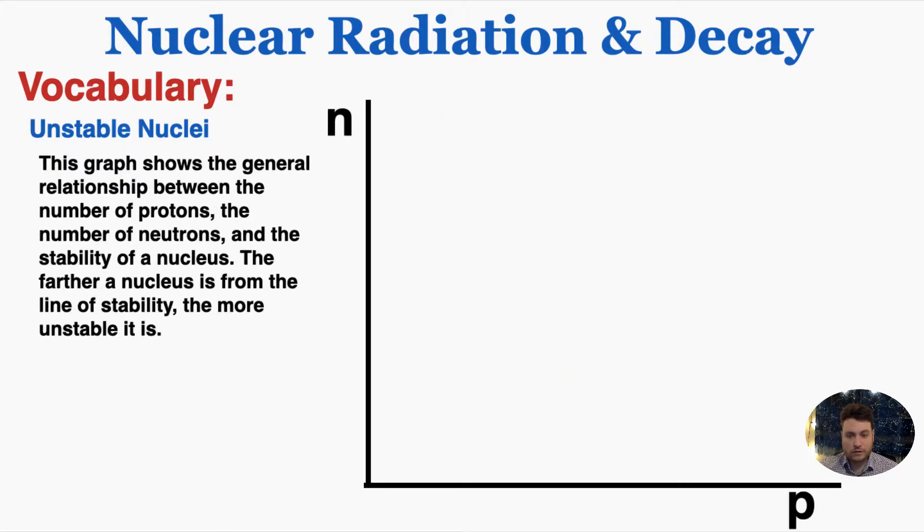This graph shows the general relationship between the number of protons P, the number of neutrons N, and the stability of a nucleus. The farther a nucleus is from the line of stability, the more unstable it is.